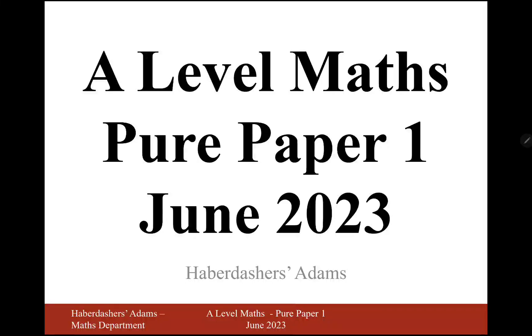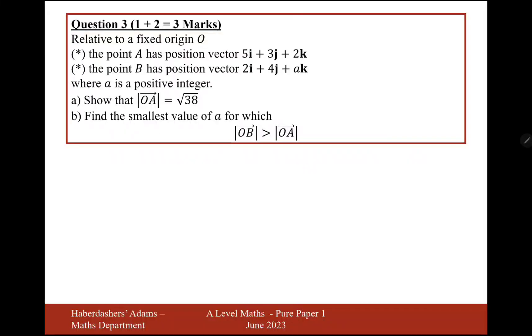Hello there, welcome to the A-level maths pure paper 1 of June 2023. Here we're looking at question 3, a vectors question. Relative to a fixed origin O, the point A has position vector 5i + 3j + 2k. Point B has position vector 2i + 4j + ak, where a is a positive integer.